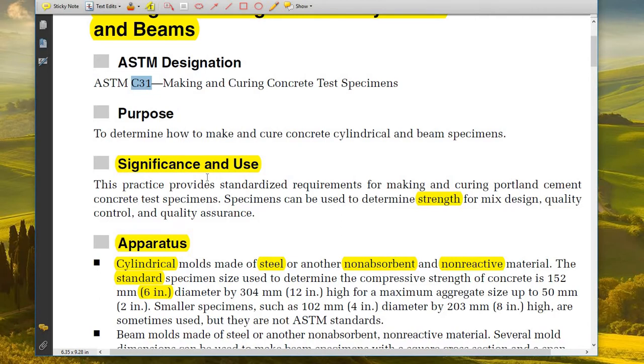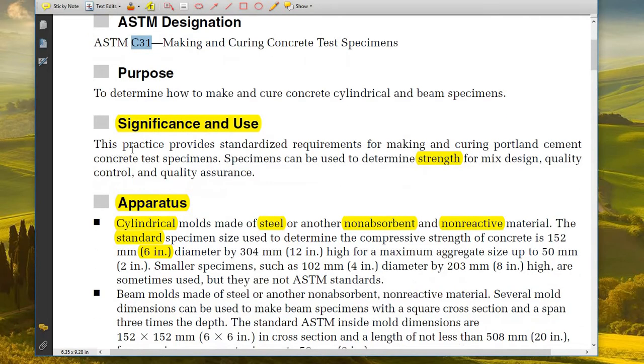The main purpose is to determine how to make and cure concrete cylinder and beam specimens. The significance and use of this is to standardize the requirements for making and curing Portland cement concrete test specimens. Specimens can be used to determine strength for mix design, quality control, and quality assurance. It is multi-purpose.